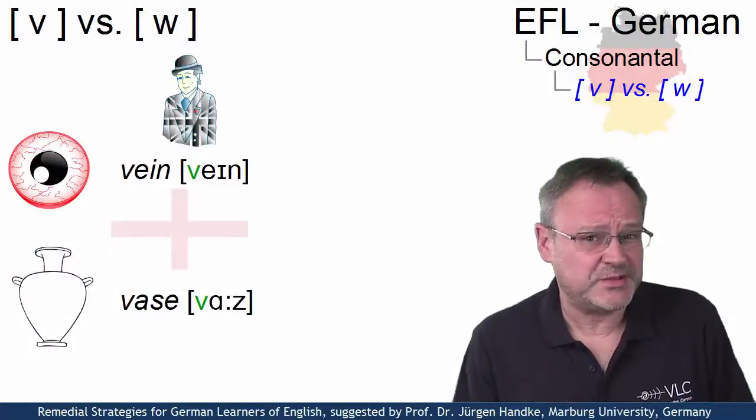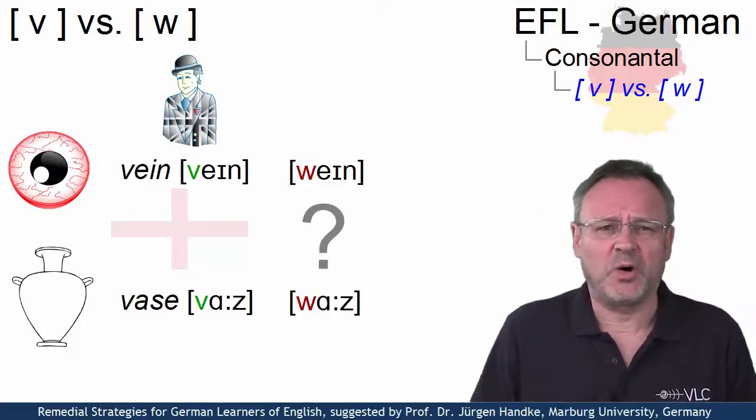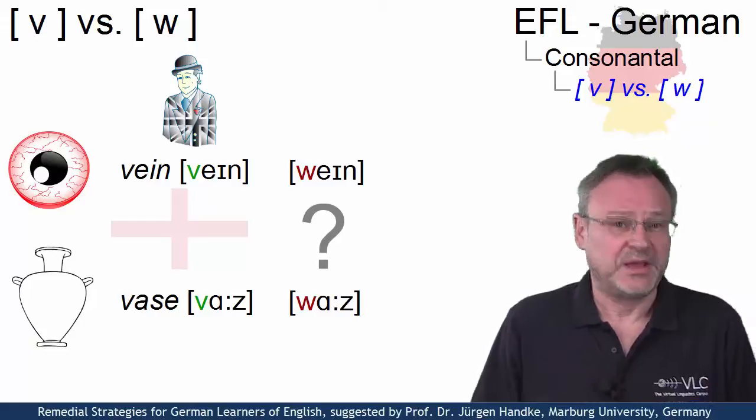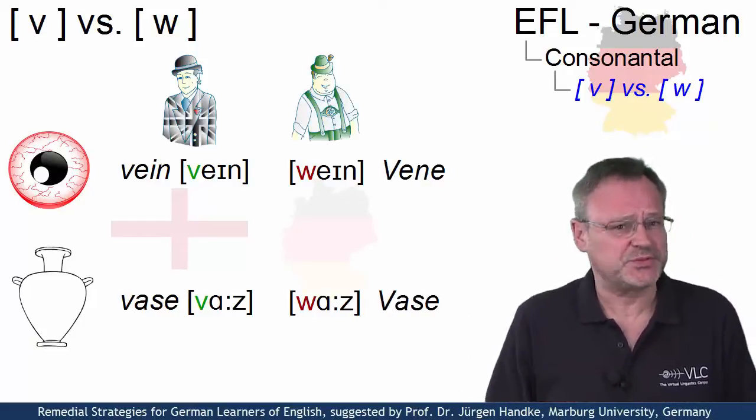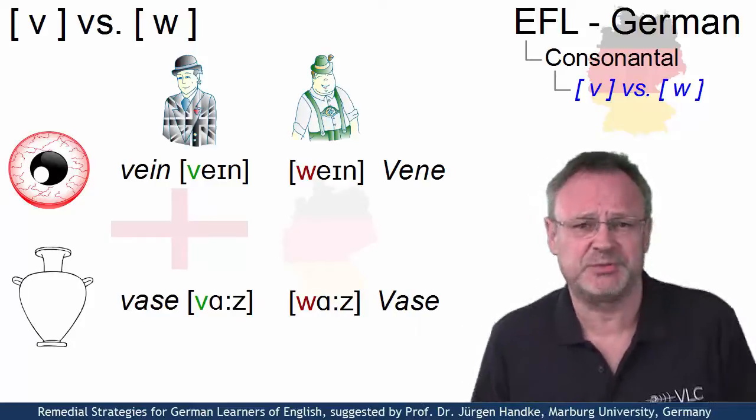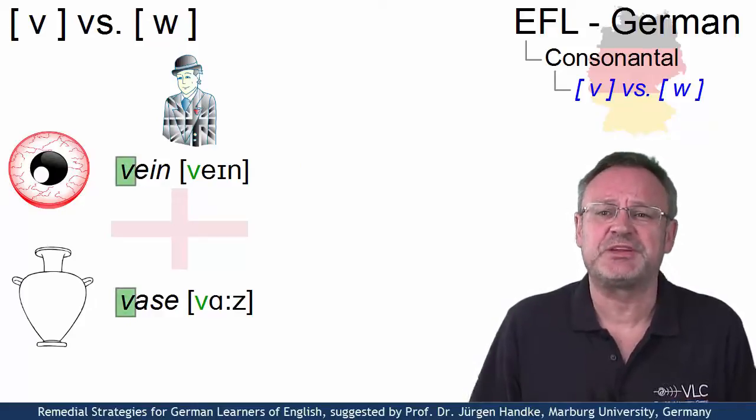Can you pronounce vein or vase, or is your result wane or was? If the latter is true, then you share a strange problem with a surprisingly large number of Germans. Our target words all exhibit an initial orthographical V and are pronounced with a labiodental fricative.